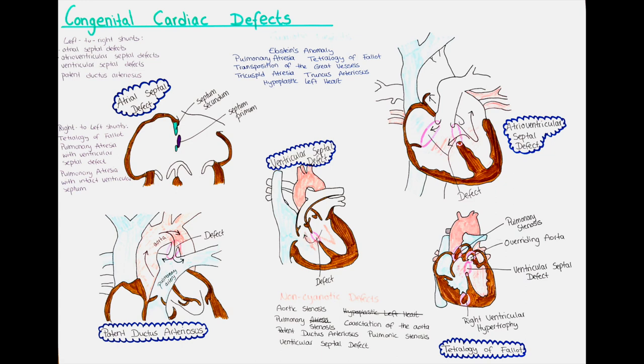Patients often have bluish extremities, and in younger infants tachypnea can occur, while breathing is usually normal in older children. With a stethoscope, a systolic ejection murmur can often be heard over the pulmonary trunk, located in the second left intercostal space. When the defect is of small to moderate size, it often closes spontaneously, and surgical closure is usually not necessary.